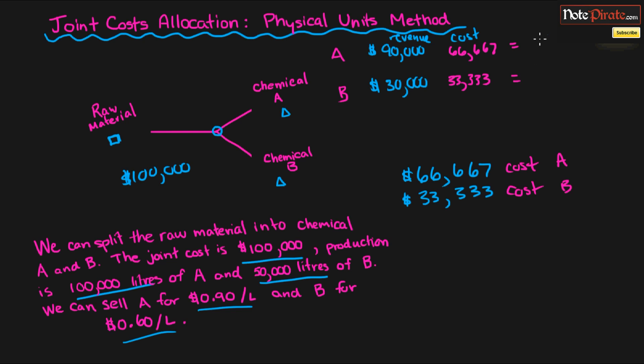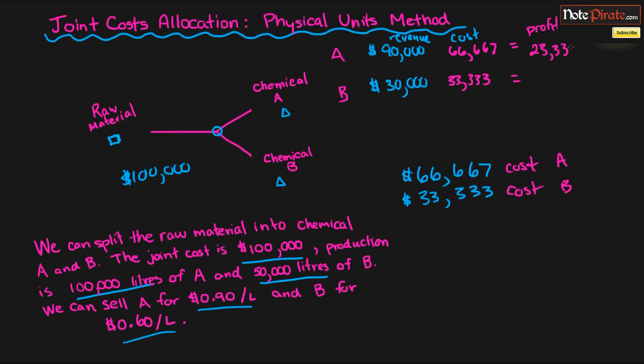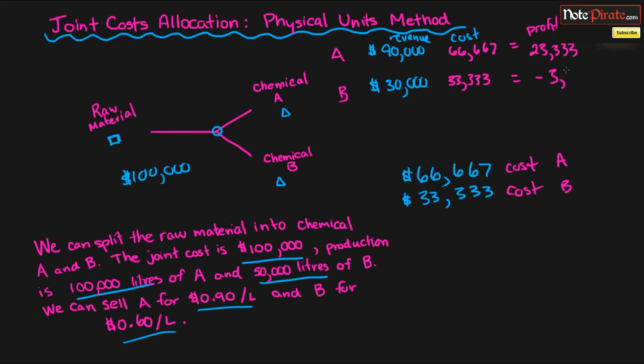So in total, what is that going to yield in profits for each of these? Well, for A, that'll be about, what, $23,000, let's see, $90,000 minus $66,667, $23,333, which is fine. And the other one will actually yield a loss of $3,333.